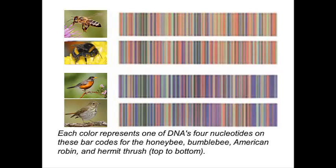The diversity of life results from different DNA gene sequences. From species to species, in this figure, each color represents DNA's four nucleotides, and the codes are barcodes for four different species.